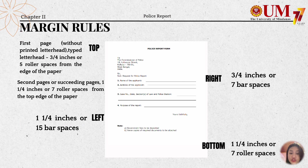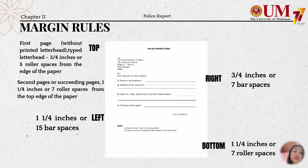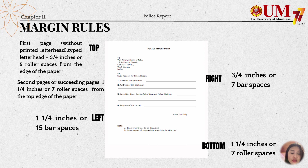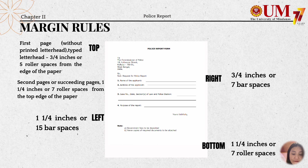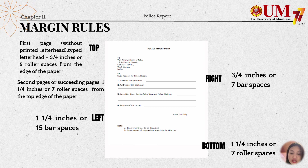Here are the margin rules for documents. For the first page without printed letterhead, the typed letterhead is usually three-fourths of an inch or five roller spaces from the edge. For succeeding pages, it is one and one-quarter inches or seven roller spaces from the top. The left margin is one and one-quarter inches or 15 bar spaces. The right margin is three-fourths of an inch or seven bar spaces. The bottom margin is one and one-quarter inches or seven roller spaces.